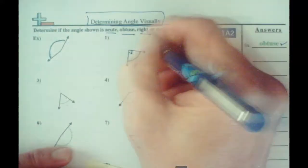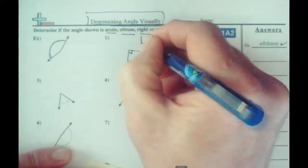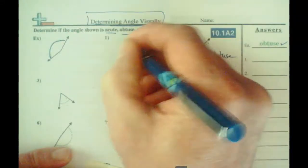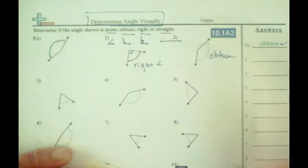Remember, a right angle, a straight angle. Obtuse is anything that's greater than 90 and acute is anything that's less than 90.